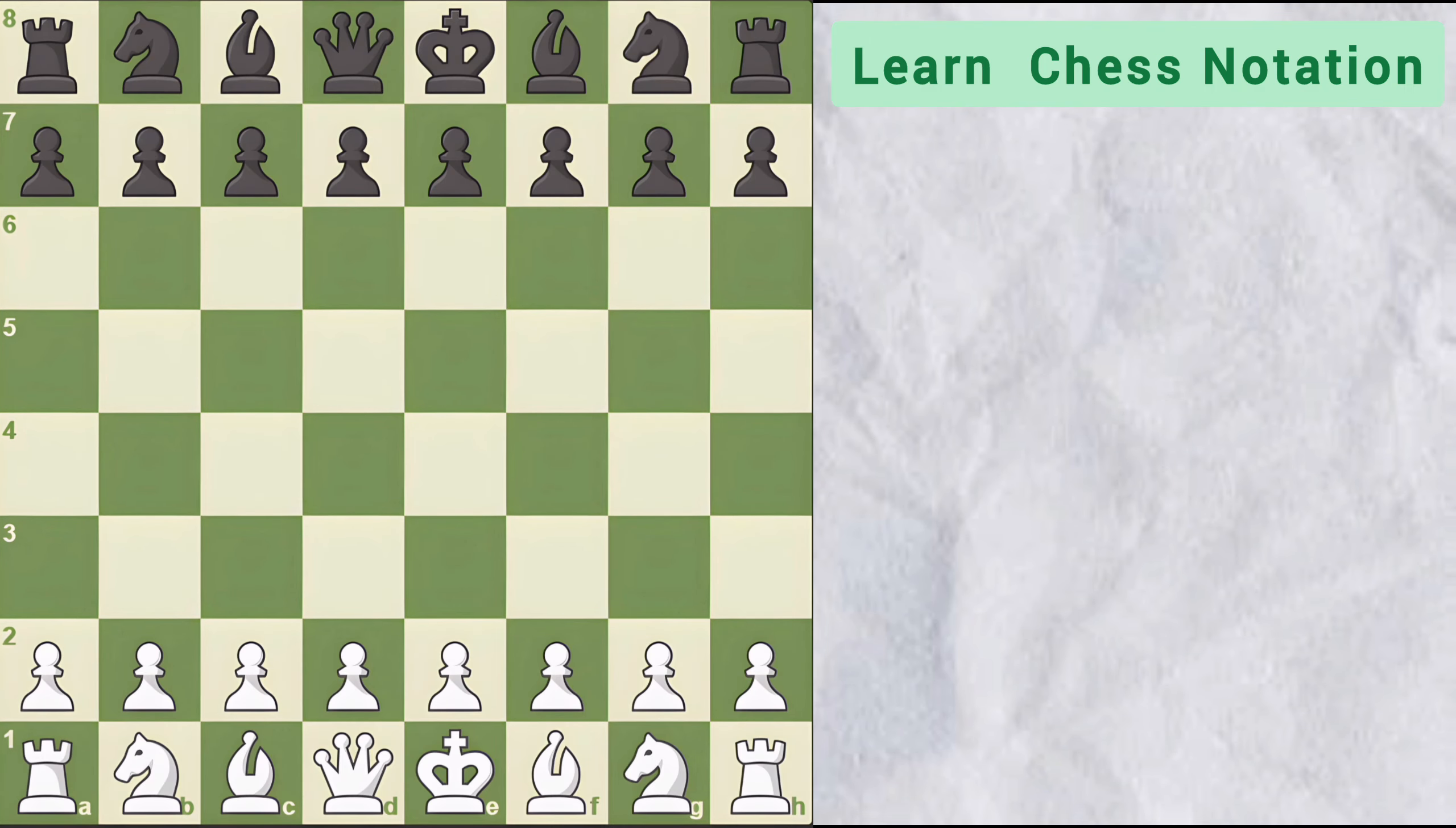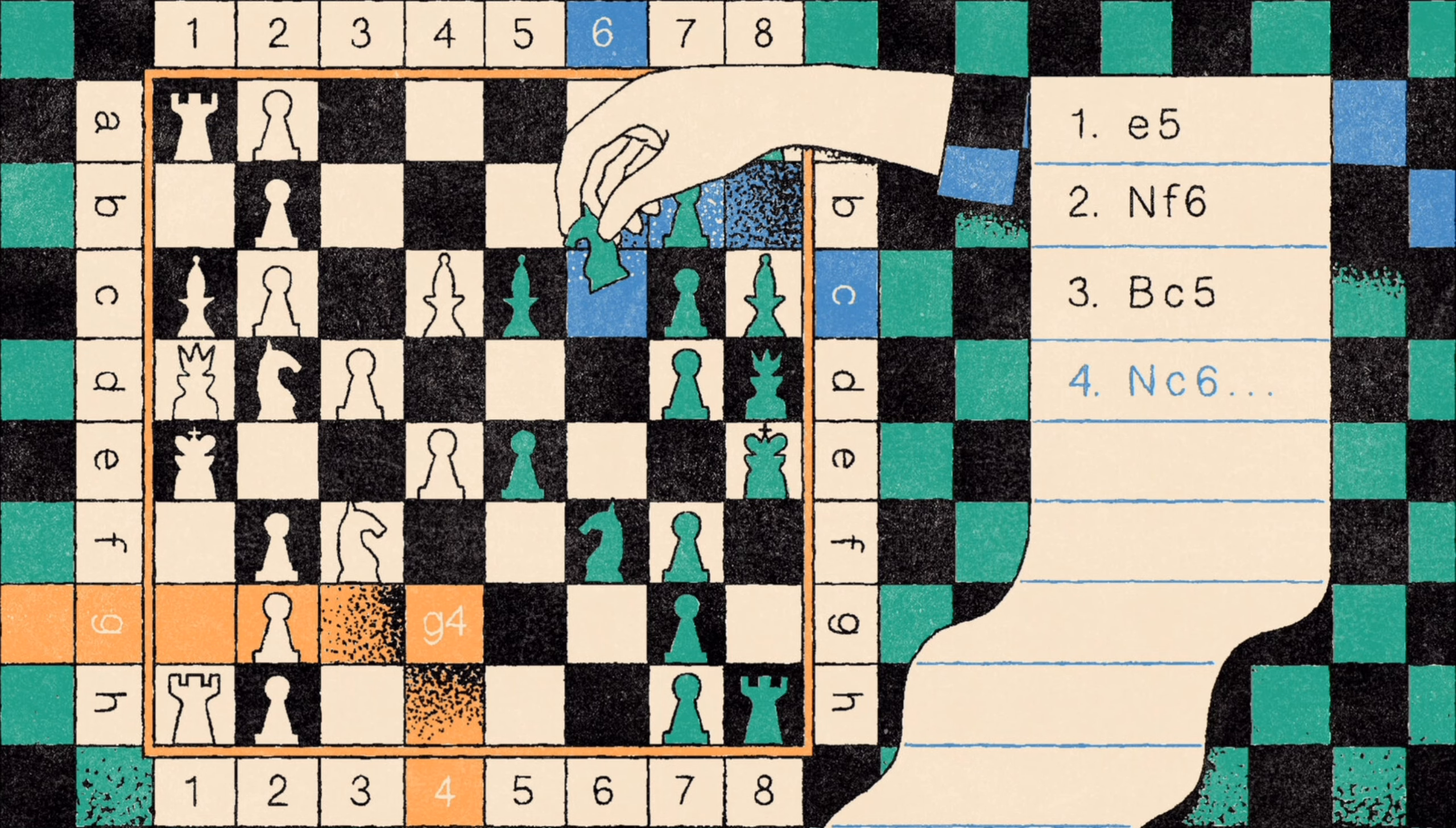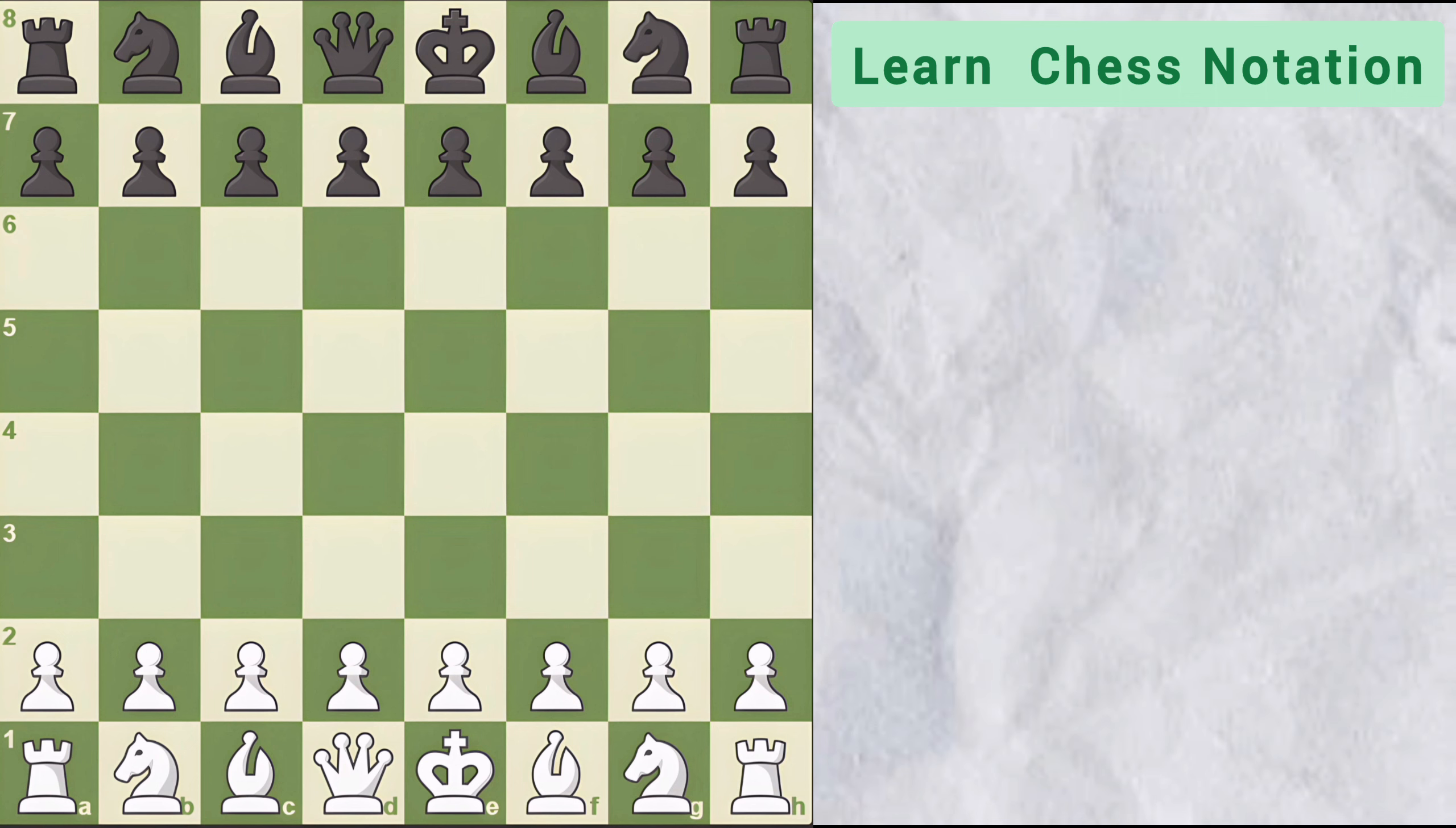Now let's move on. So there are different types of notation. But nowadays, the most common and widely spread is algebraic notation. It is like the GPS of chess pieces. Each piece is represented by its first letter.